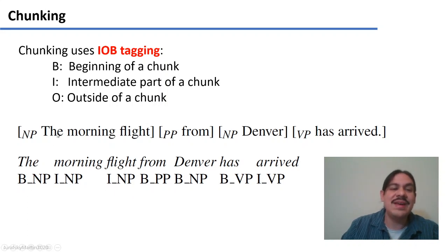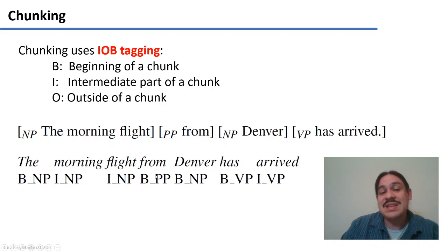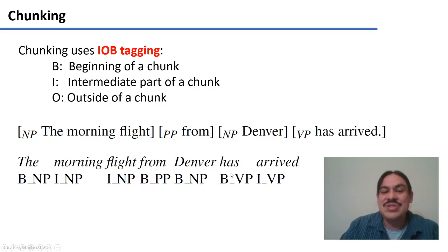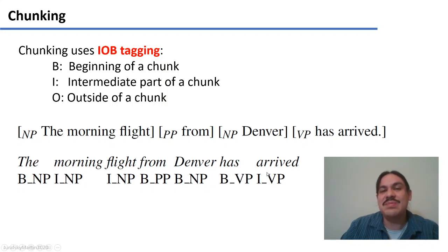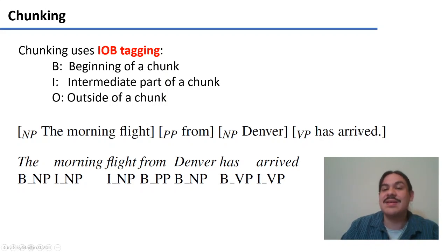So 'the morning flight' is: B-NP, I-NP, I-NP. Then we have the beginning of a prepositional phrase — 'from' — and we jump to the beginning of a different noun phrase, 'Denver'. Then we jump to the beginning of a verb phrase — 'has' — and to the intermediate part of a verb phrase, 'arrived'. So 'has' is the B of its verb phrase, and 'arrived' is the I of its verb phrase.